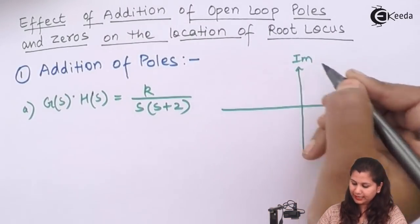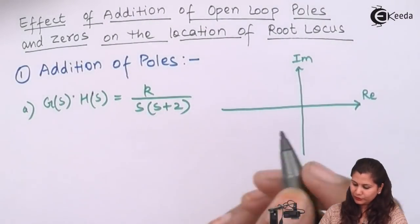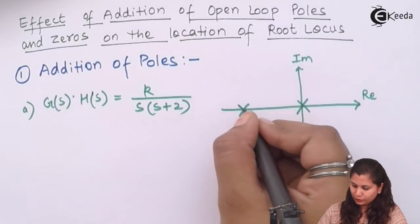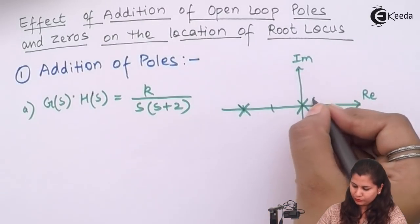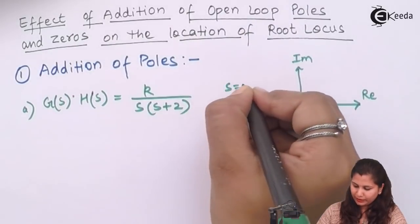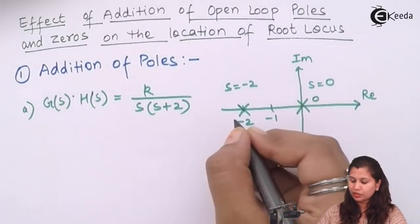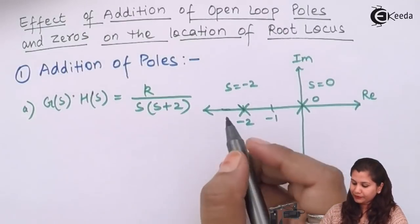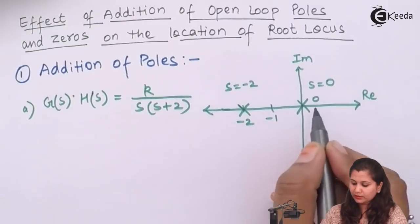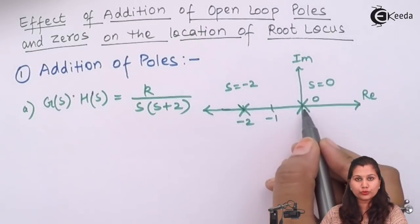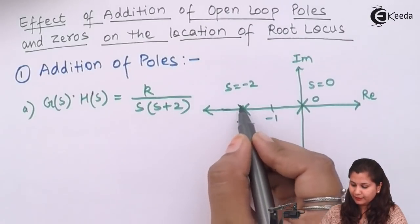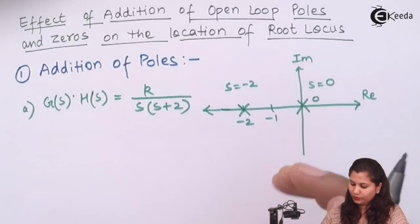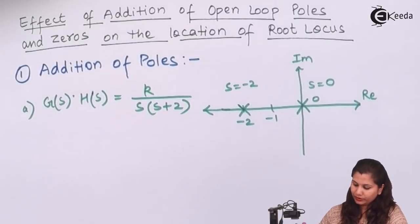This is the imaginary axis and this is the real axis. So first we will have s equals to 0 as one pole and the second pole is s equals to minus 2. So this is minus 2, minus 1, this is 0. Now we will see the root locus for this. If we take a point here, the number of poles on the right hand side are 2, so the direction of root locus for the pole s equals to minus 2 will be towards the origin. So the direction of root locus will be this.